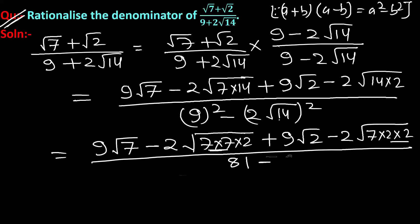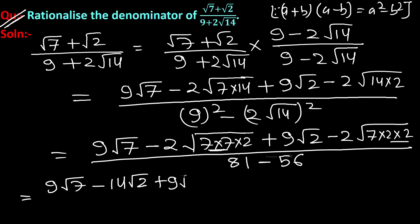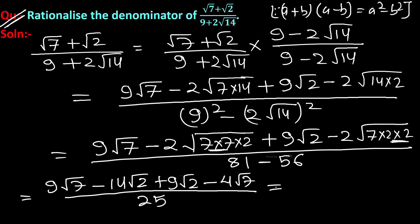And 2² × 14 = 4 × 14 = 56. So we get 9√7, and since 14 = 7×2, we take out pairs: 14√2 + 9√2 minus, and from the other term pairs of 2 come out giving 4√7, upon 81 minus 56 which equals 25.